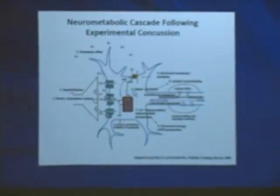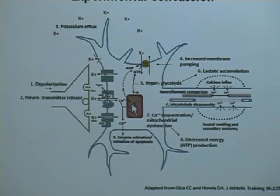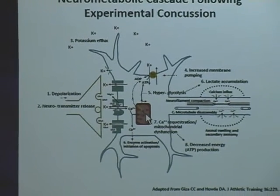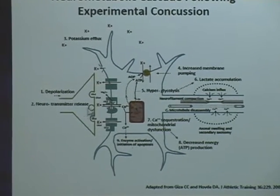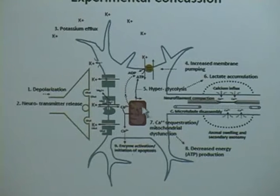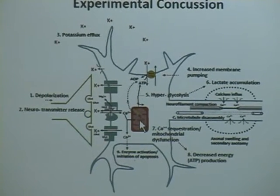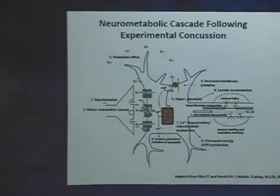In addition, calcium is dumped inside the cell. The cell tries to concentrate it back into organelles, including the mitochondria — where energy is produced — but when calcium gets into the mitochondria, it prevents them from producing energy. So you have a mismatch: you need energy to pump potassium back in, but at the exact same time, you can't produce energy. It takes a long time for that metabolic process to return to normal — for potassium balance to be restored and normal energy production to resume. That is the functional injury associated with concussion.